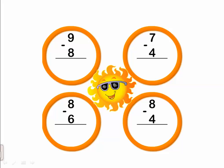The next one: seven minus four. Which one is the smaller? The smaller number is four. After four: five, six, seven. So seven minus four equals three. Next: eight minus six. The smaller number is six. Let's count after six till eight. After six: seven, eight. So eight minus six equals two.